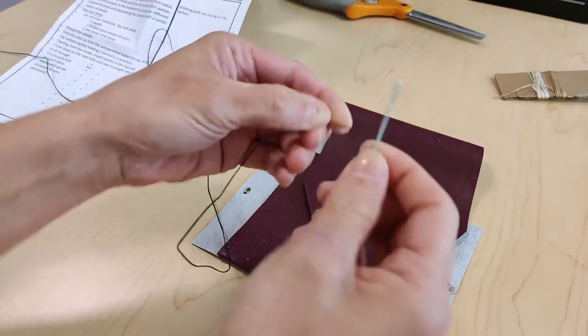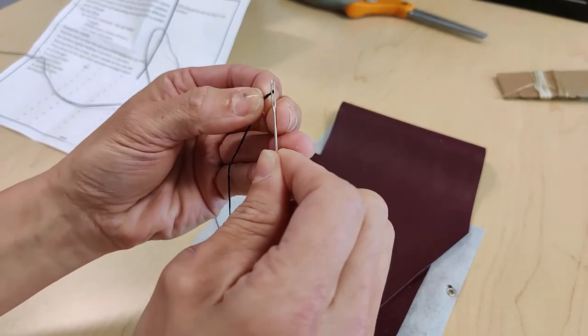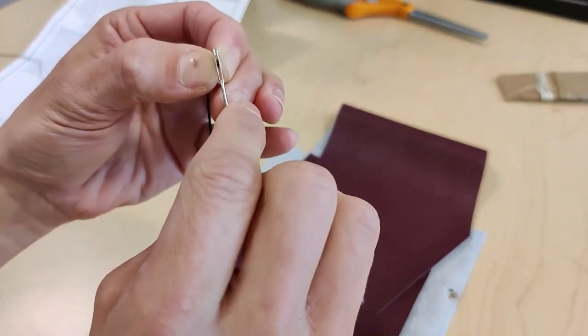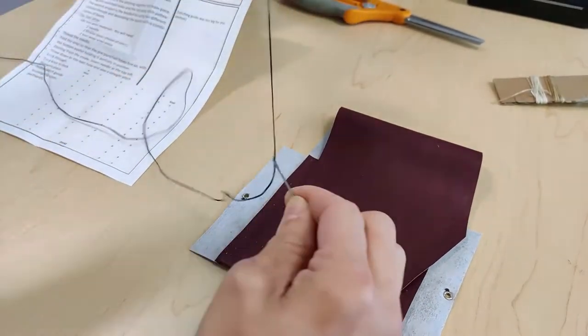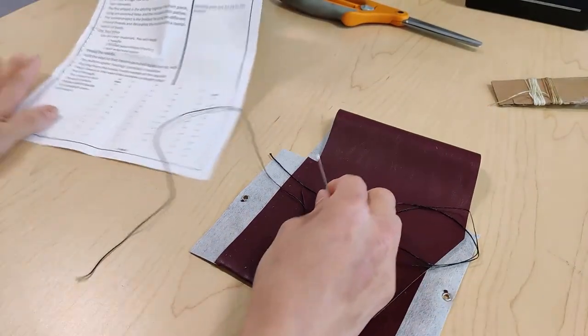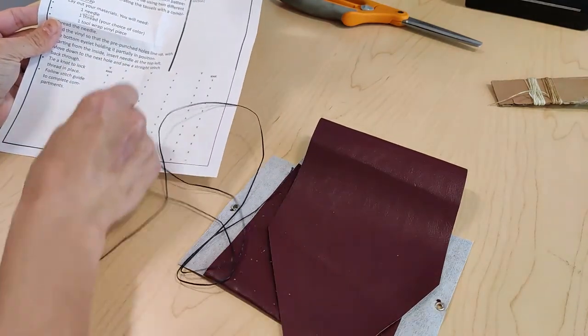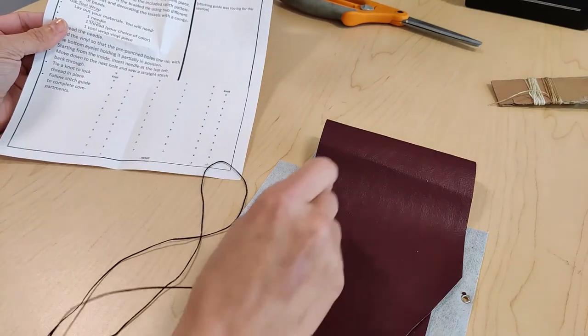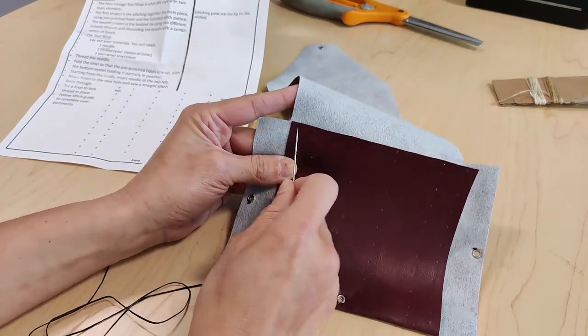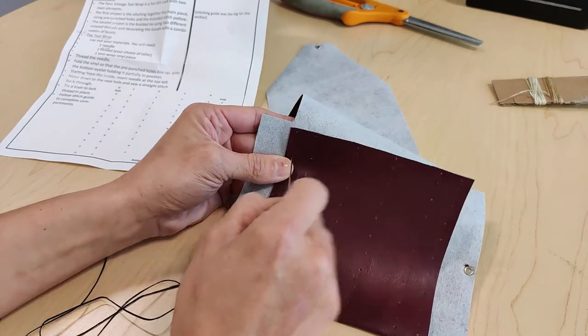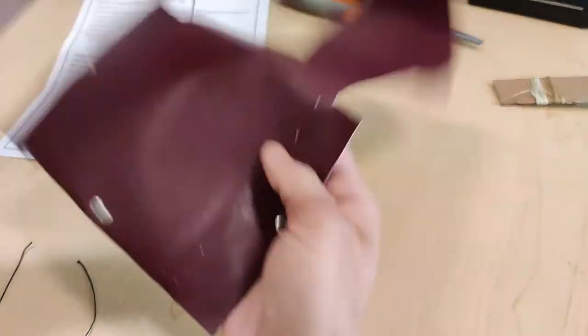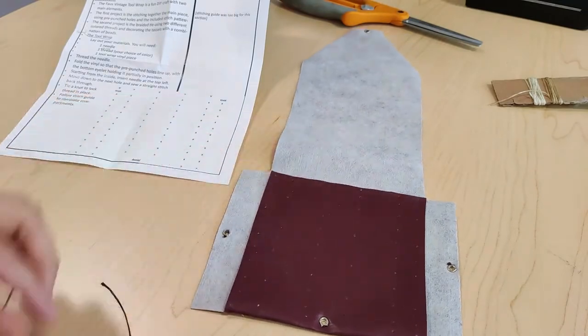Take one end of your waxed thread and thread the needle. Now you're going to use the pattern on your instructions to show you the direction in which to start to stitch your vinyl wrap. We're going to be starting at the top left-hand corner where there's pre-punched holes. The pre-punched holes correspond to the holes on the back. This is the inside of your wrap and this is the outside.